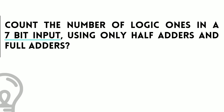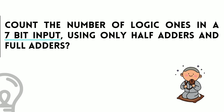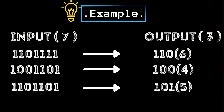Today I have a question for you: count the number of ones in a 7-bit input using adders. To understand the question, let's see an example. We have an input of 7 bits and an output of 3 bits. In the first example, the input is one, one, zero and four ones.